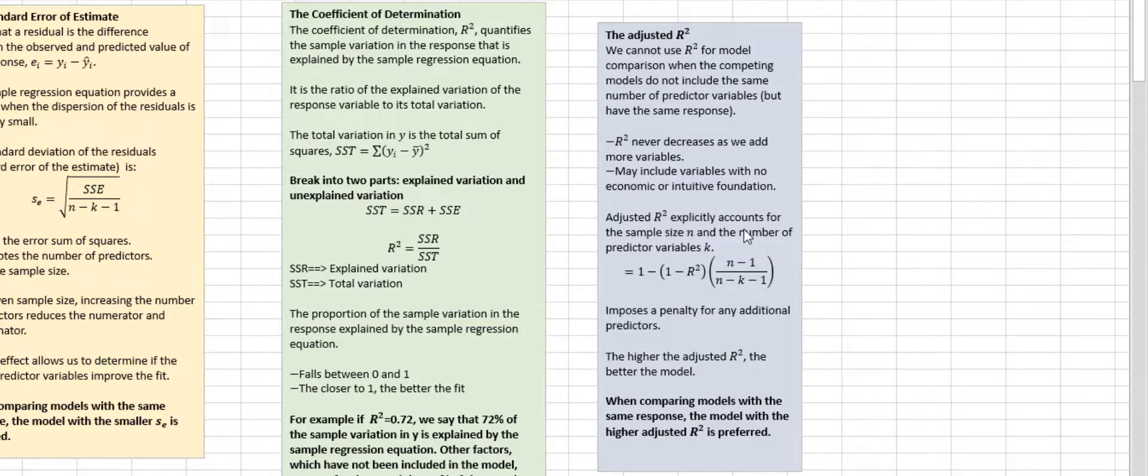Therefore, adjusted R square explicitly accounts for the sample size n and the number of predictor variables k. You can find the adjusted R square formula here. So adjusted R square, as you see from the formula, imposes a penalty for any additional predictors. Therefore, the higher the adjusted R square, the better the model. When you are comparing models with the same response, the model with the higher adjusted R square is preferred.